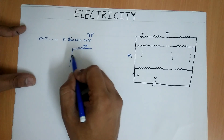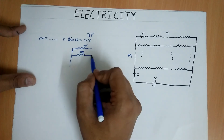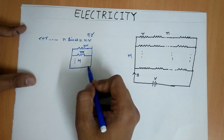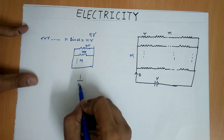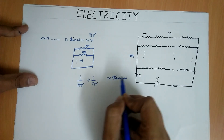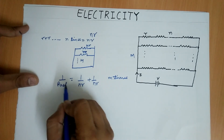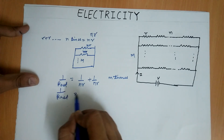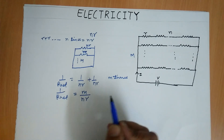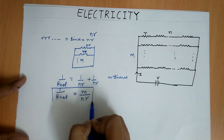Now we have m such nR resistances connected in parallel. So 1 by R_net equals m times (1 by nR), which gives 1 by R_net equals m upon nR. Therefore, R_net equals nR divided by m.